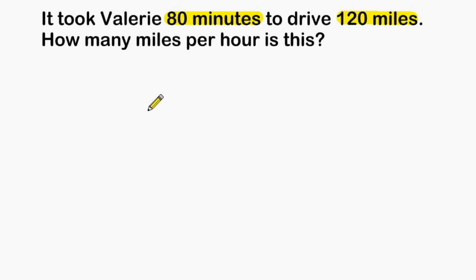One way to solve this problem is by creating a ratio table. The ratio in this problem is going to be minutes to miles. On this side we are going to write minutes and on the other side we are going to write miles. Next we are going to insert the information given in the problem: it took Valerie 80 minutes to drive 120 miles.